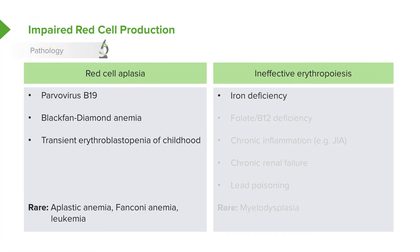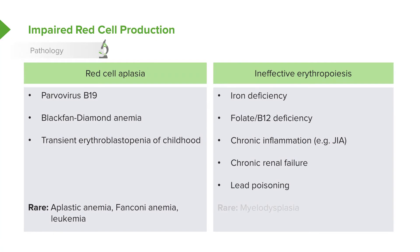Patients can also have ineffective erythropoiesis — a difficulty at some stage of actually making red cells. Causes include iron deficiency, folate or B12 deficiency, chronic inflammation such as juvenile idiopathic arthritis, chronic renal failure which decreases EPO production, and lead poisoning which can interfere with red cell production.